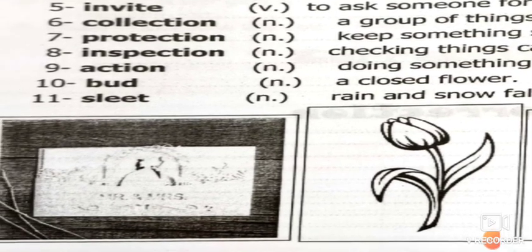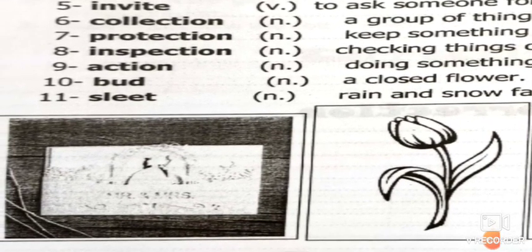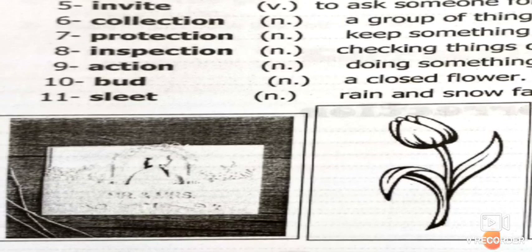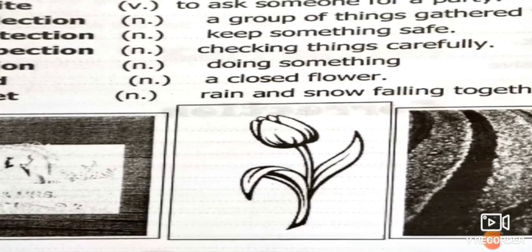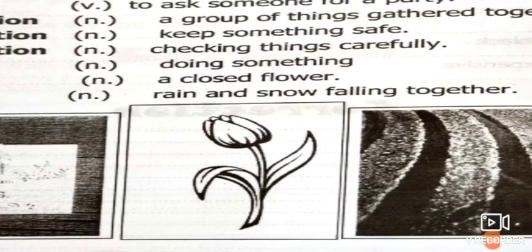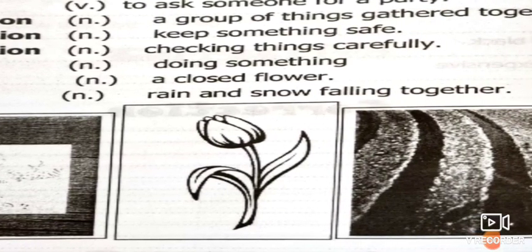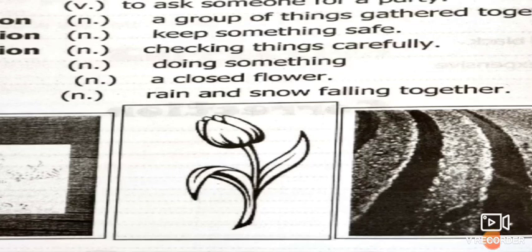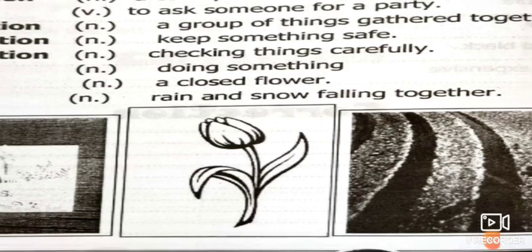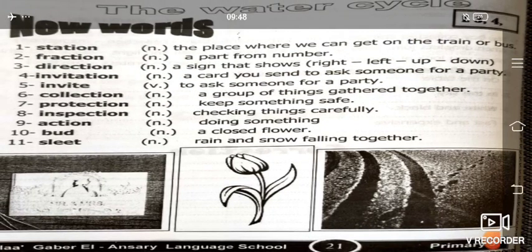The last word: 'sleet,' which we took last time. Sleet means rain and snow falling together. Now are the words easy? Let's revise the words again.